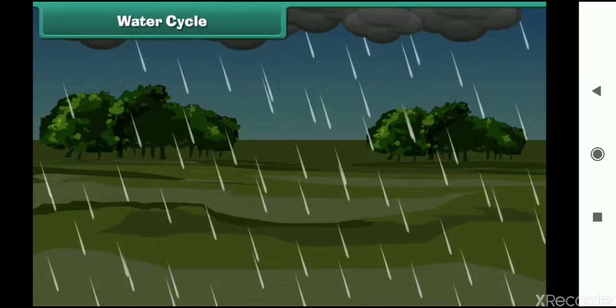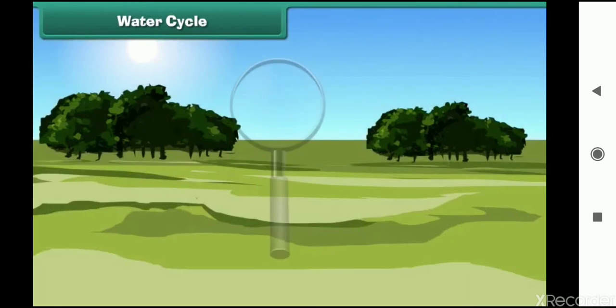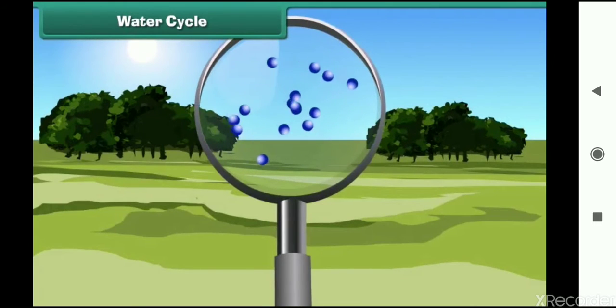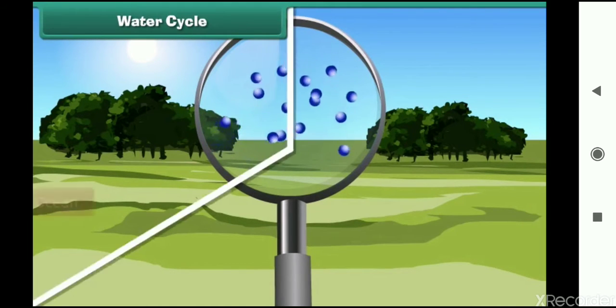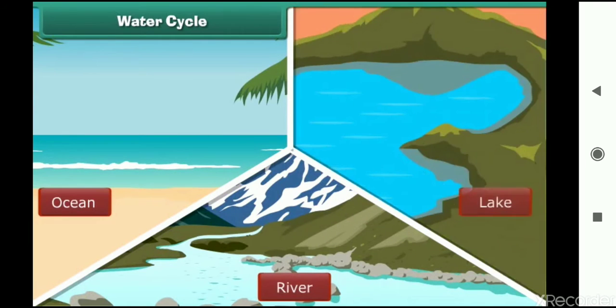Have you ever wondered where does all the water in rain come from? Well, there is always a certain amount of water vapor in the atmosphere. It comes from the earth's surface water like oceans, rivers, and lakes. The heat of the sun heats up the water from the surface of these reservoirs and changes water from the liquid state to the gaseous state.